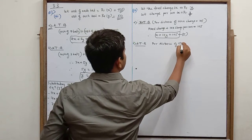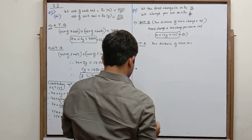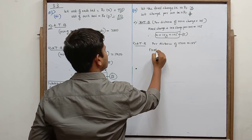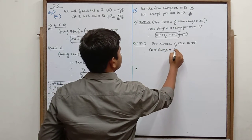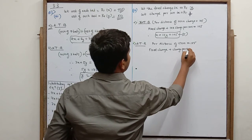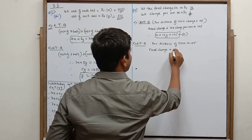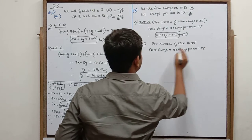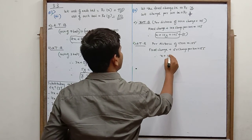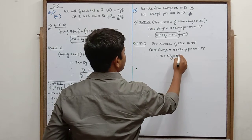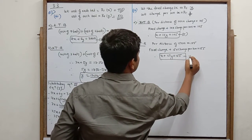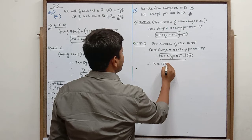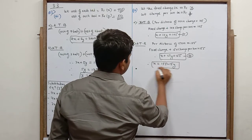For a distance of 15 kilometers the charge is rupees 155. So fixed charge plus 15 into charge per kilometer equals 155. Therefore x plus 15y is equal to 155. Call this equation 2. Simplifying equation 2: x equals 155 minus 15y. Call this equation 3.